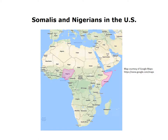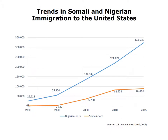Somalia is located in East Africa, in the region known as the Horn of Africa. Nigeria is located in West Africa. The two countries have varied histories of immigration to the United States. In 1980, Nigeria had an immigrant population of more than 25,000 in the US, while Somalia's immigrant population was less than 700. By 2015, the Nigerian immigrant population had risen to more than 323,000, while that from Somalia was just under 90,000.